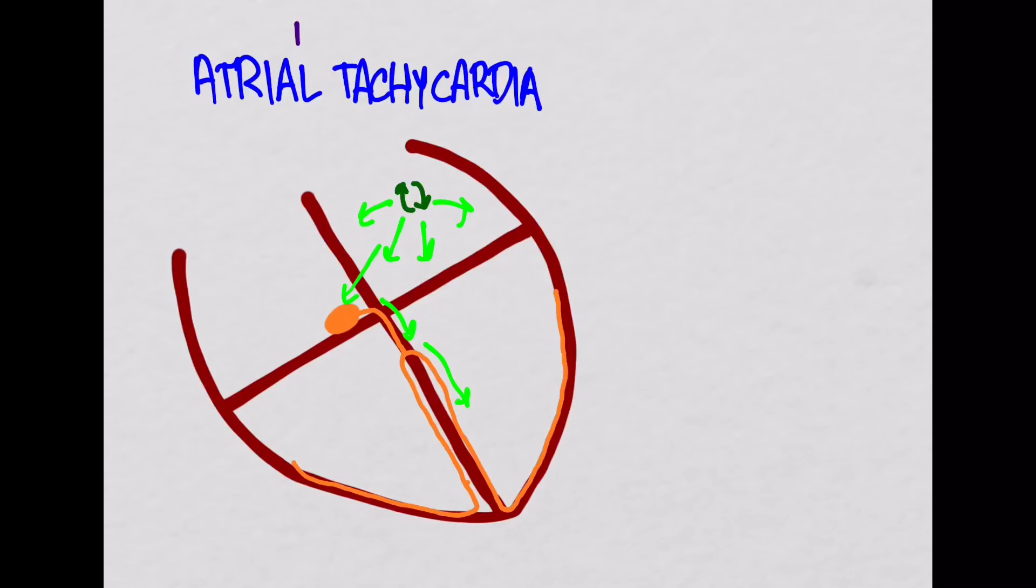Another one that also exists is something called multifocal atrial tachycardia. It's just like this one, except that there are other foci that are causing the tachycardia. I believe the definition includes the fact that you have to have at least three foci. And you'd notice that on the EKG because you'd have three different looking P waves.